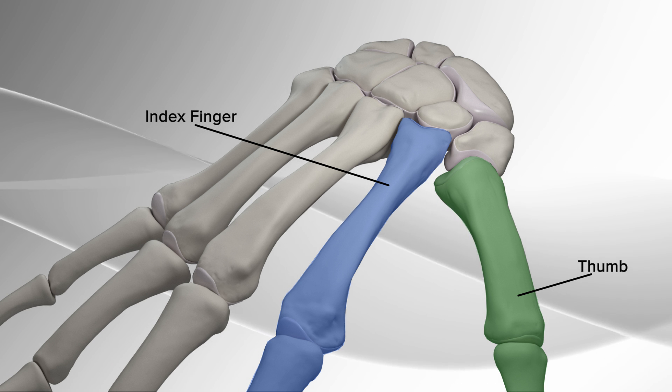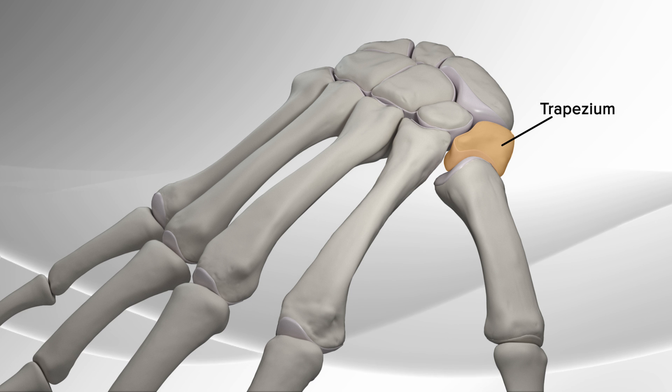Surgery for this condition is aimed to eliminate such bone-on-bone contact by removing the diseased bone, trapezium, from the wrist.